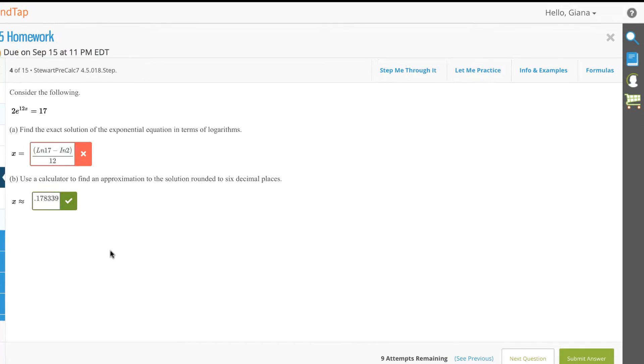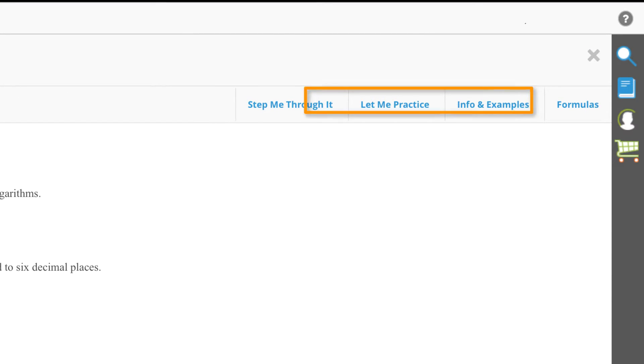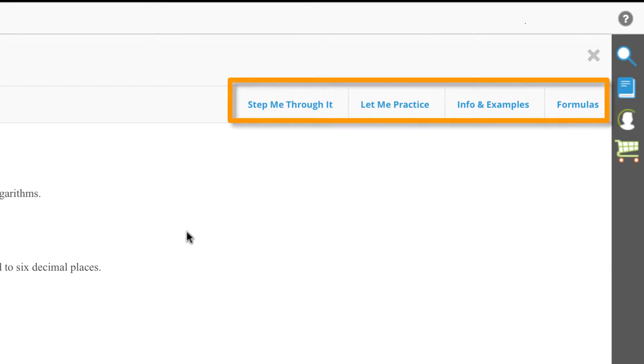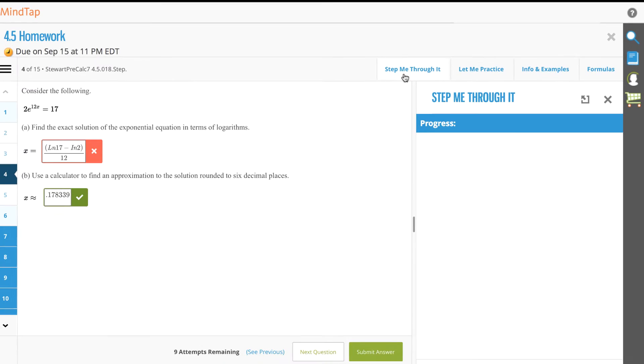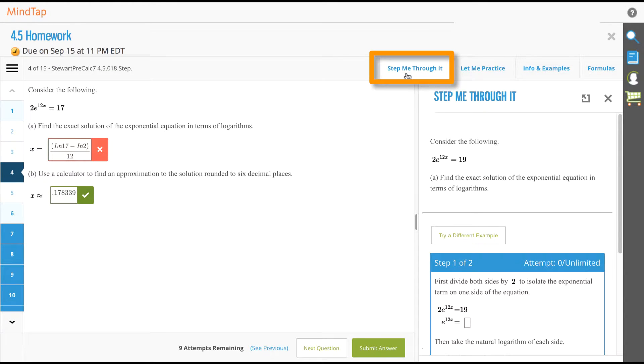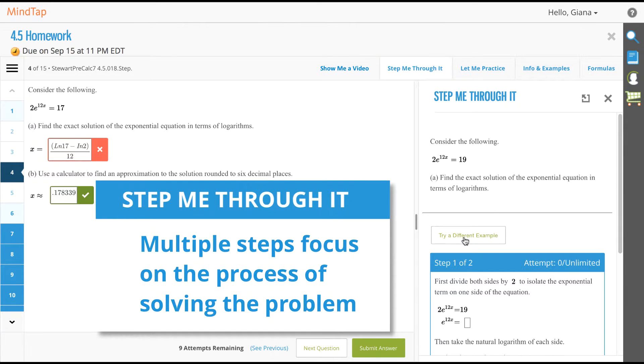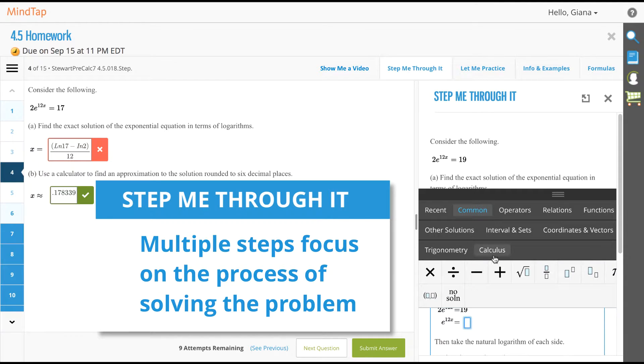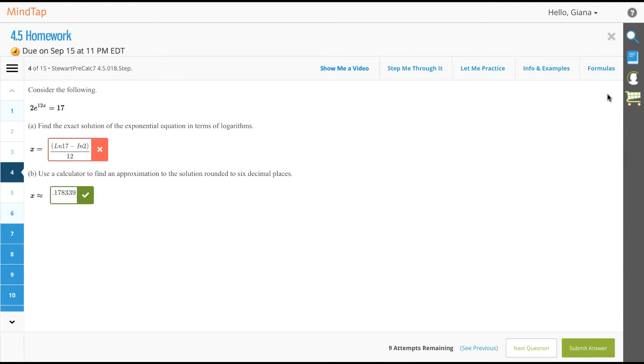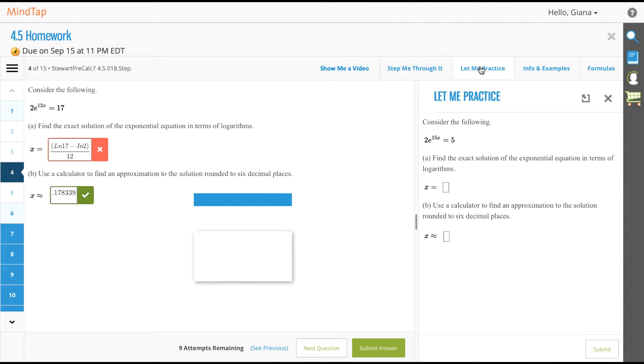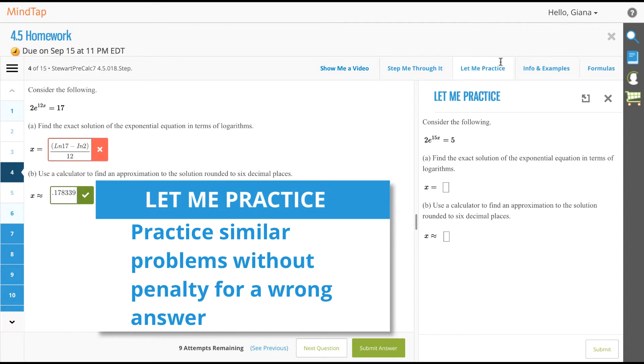On the right side of the problem, you have access to the step-by-step help resources. There are five possible types of resources that may be available to you. Step Me Through It shows you how to break the problem down into multiple steps to focus on the process of solving the problem.